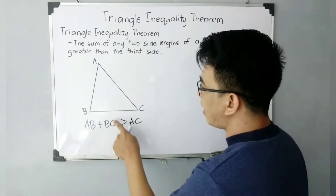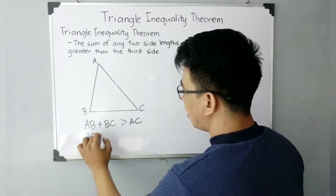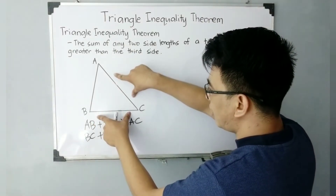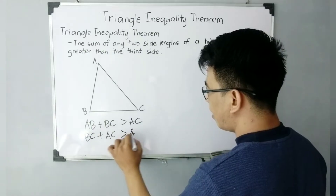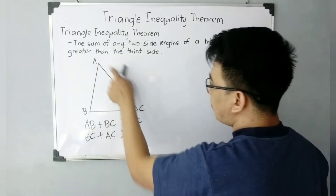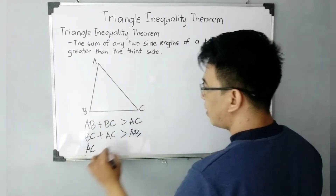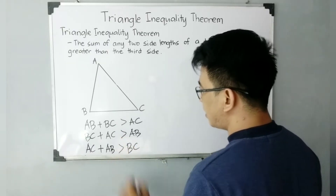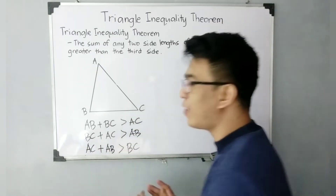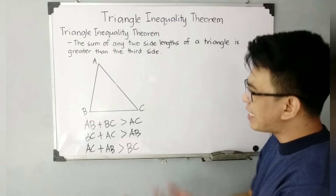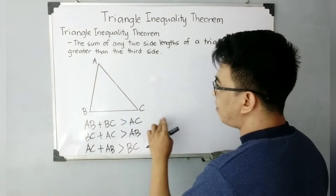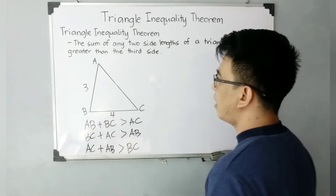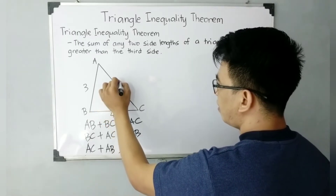Let's look at the theorem more closely. What if we add BC plus AC? When you add the measurement of side BC and AC, that is greater than your side AB. And the last possible combination is when we add the length of AC plus the length of AB, their sum is always greater than side BC. Now to help you visualize this, let's assign some numbers: side AB measures 3 units, side BC measures 4 units, and side AC measures 5 units.